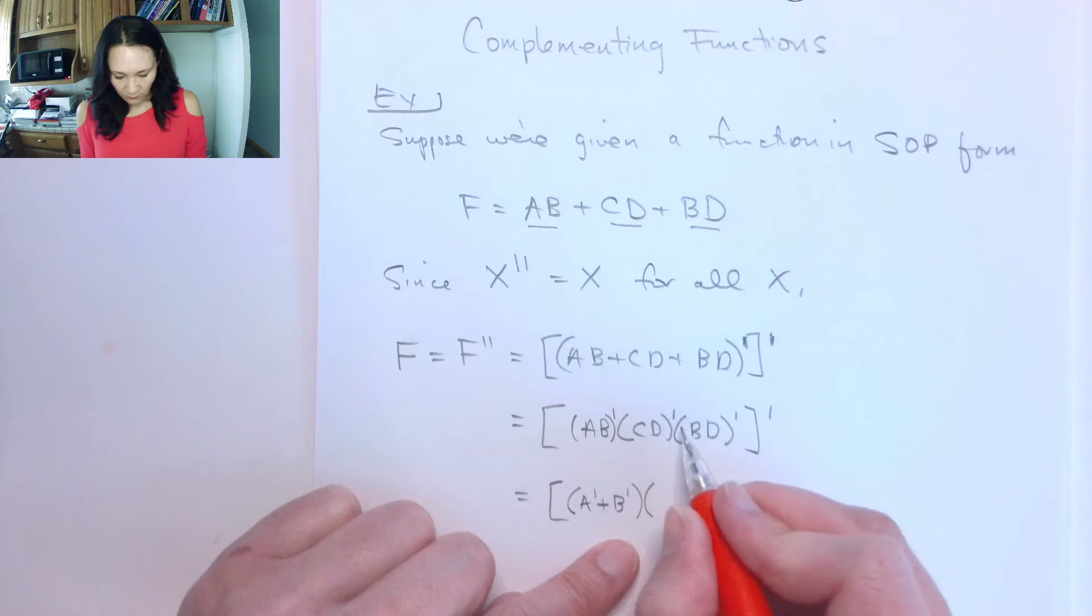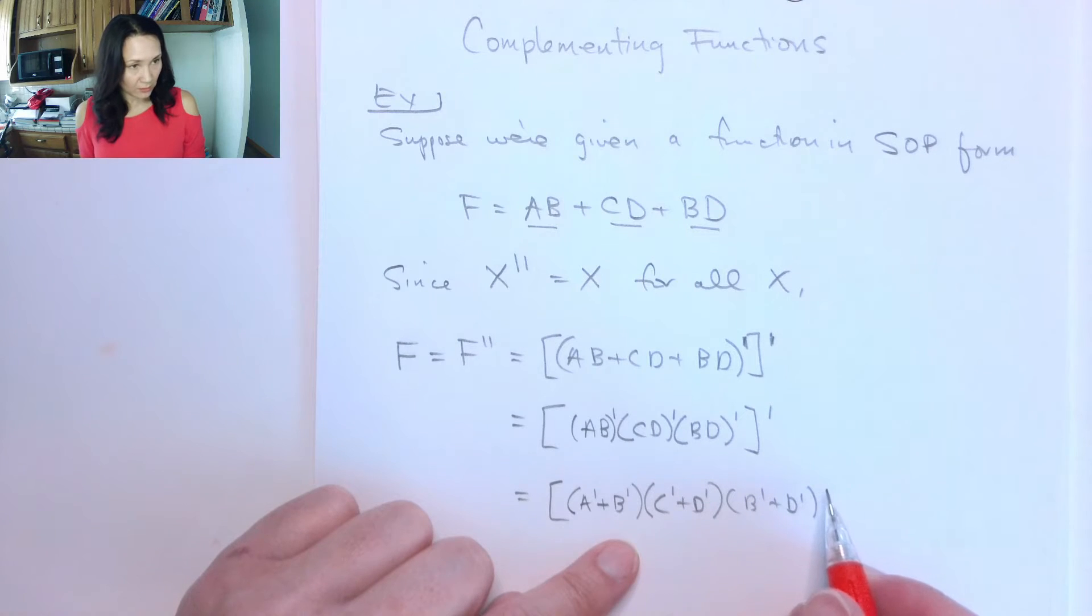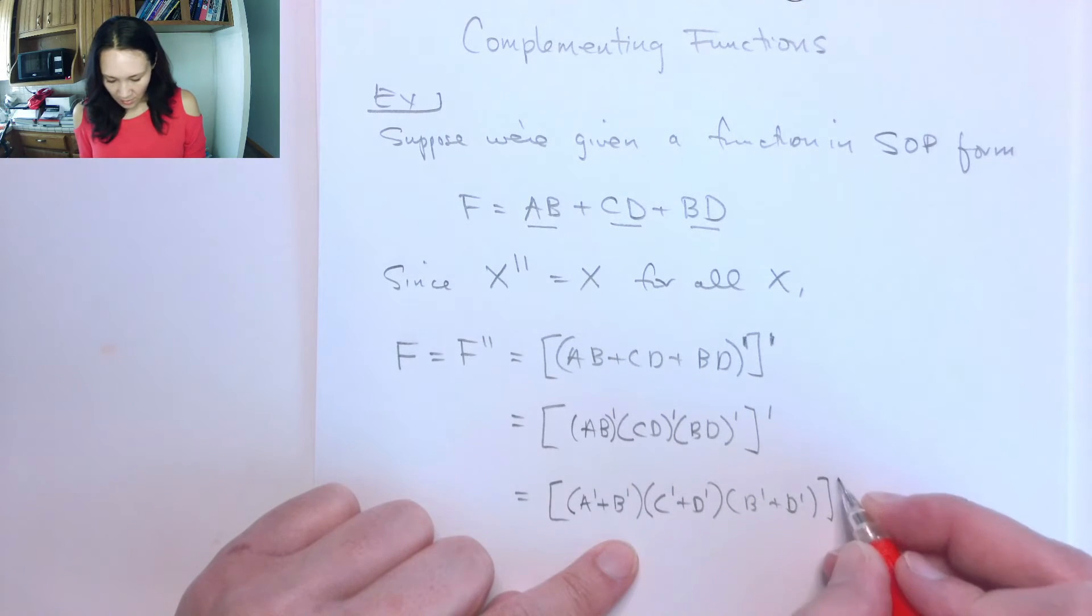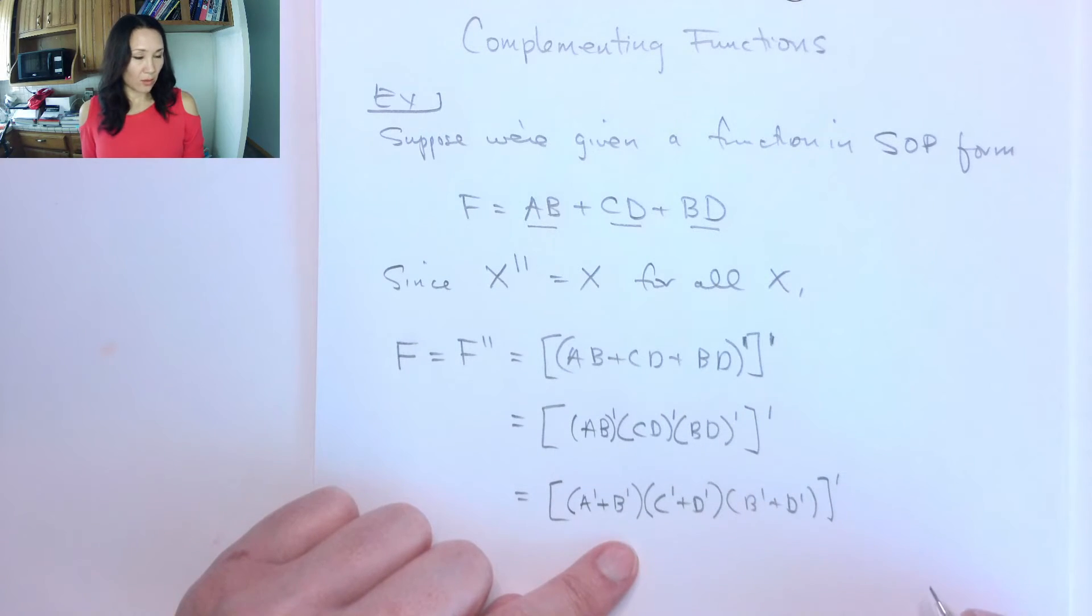So I'm going to do that again for this. This becomes C not or D not. This becomes B not or D not. And now I no longer have the complements on the outside of the parentheses because I distributed them in, but these are still ANDed. And I also still have this outer complement.